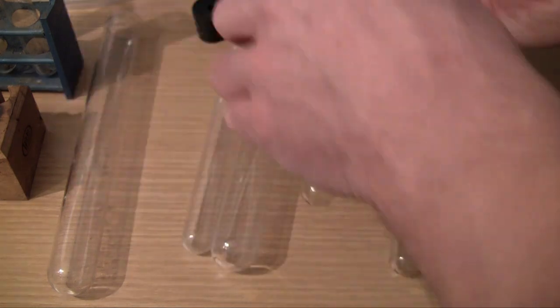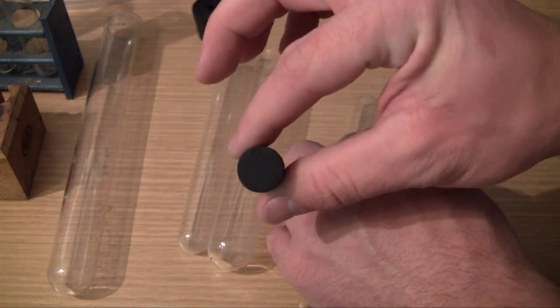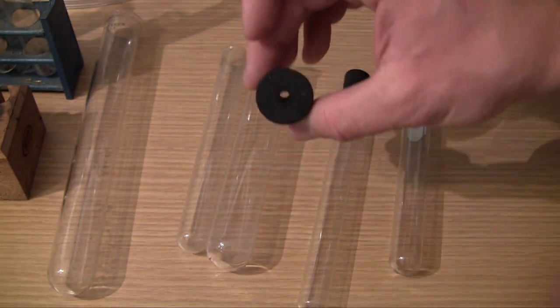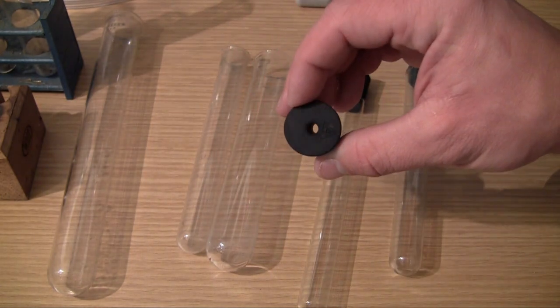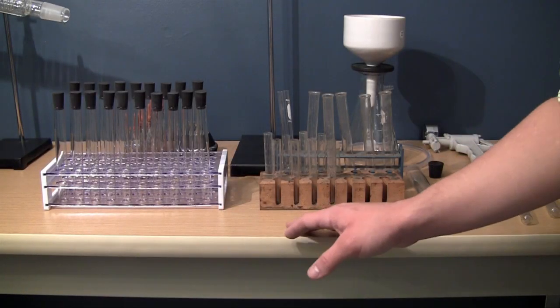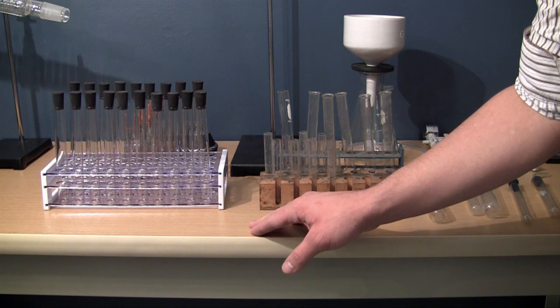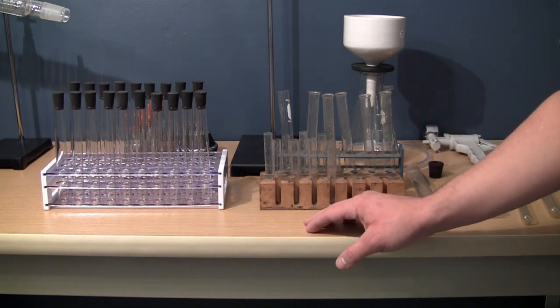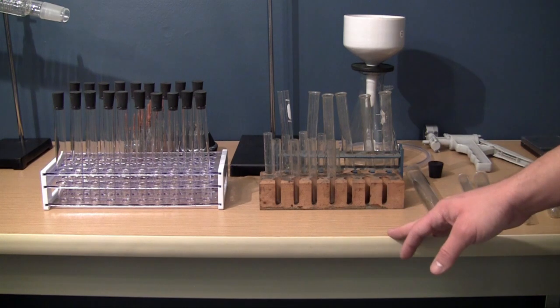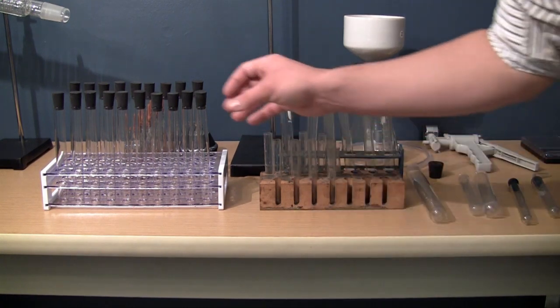So again, remember that whenever you buy test tubes, make sure to get solid rubber stoppers or corks and also rubber stoppers with a hole in them for whenever we want to capture fumes. Now it's best to have a wide variety of test tubes in different sizes, and you also want to have a mixture of plastic and glass test tubes. If you can only choose one, I would probably recommend glass.